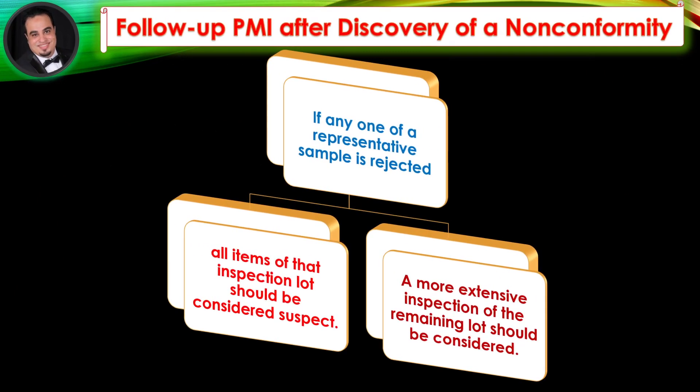Follow-up Positive Material Identification: After discovery of a nonconformity, if any one of a representative sample is rejected, all items of that inspection lot should be considered suspect. A more extensive inspection of the remaining lot should be considered.